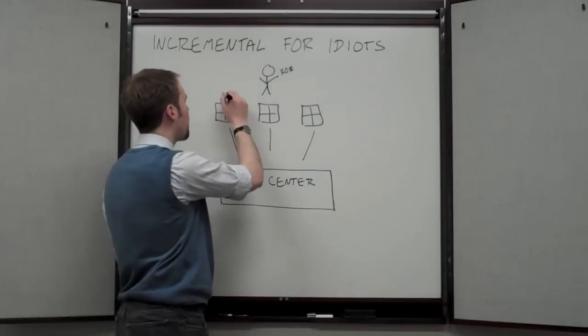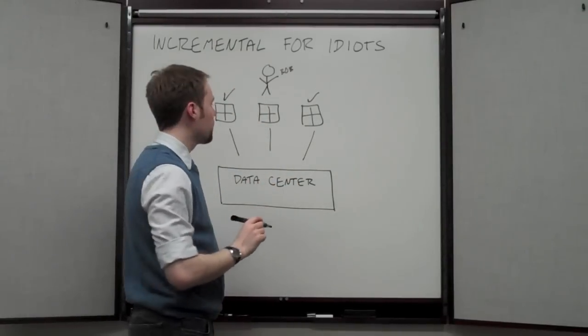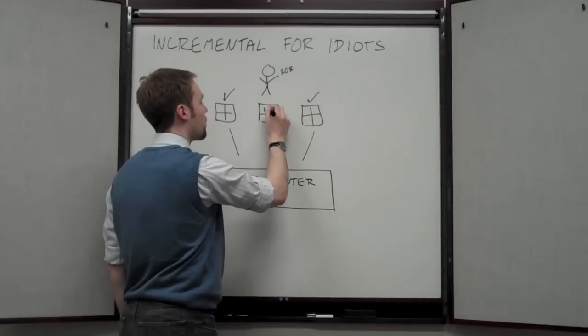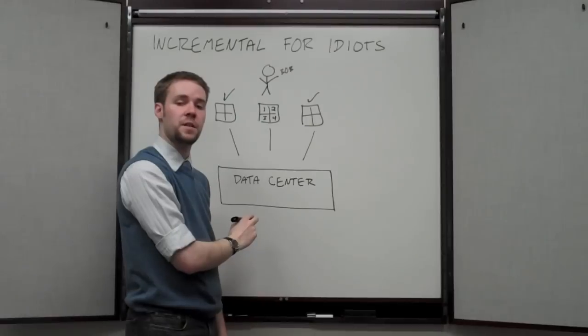So let's say that files 1 and 3 are exactly the same. It's only the second file that needs to be different. So if the first time it looked like 1, 2, 3, 4, all of those blocks got sent to the backend.